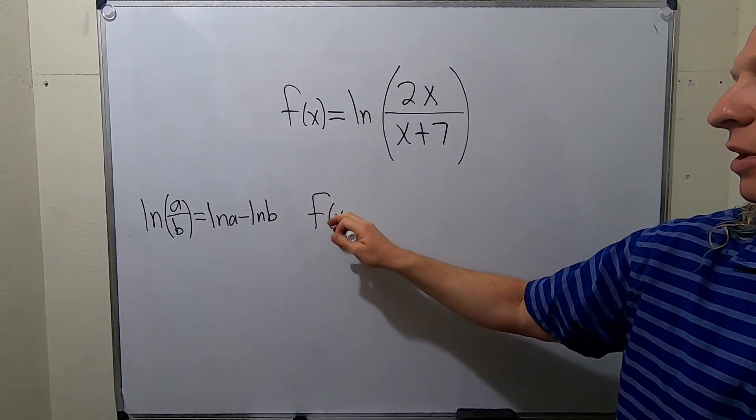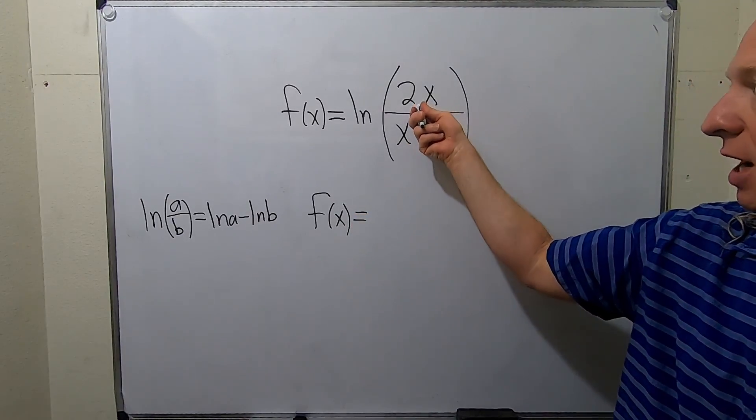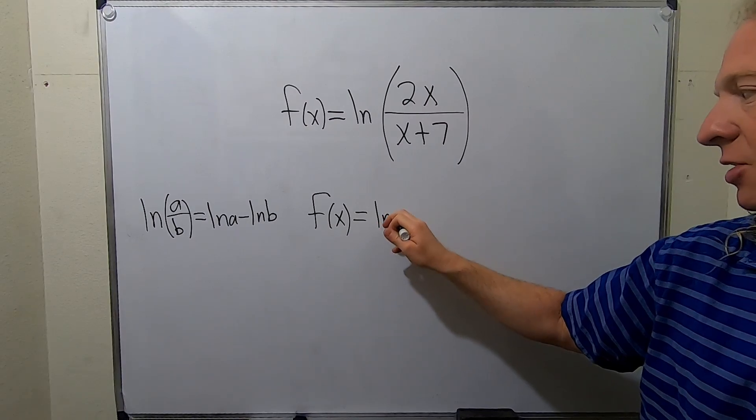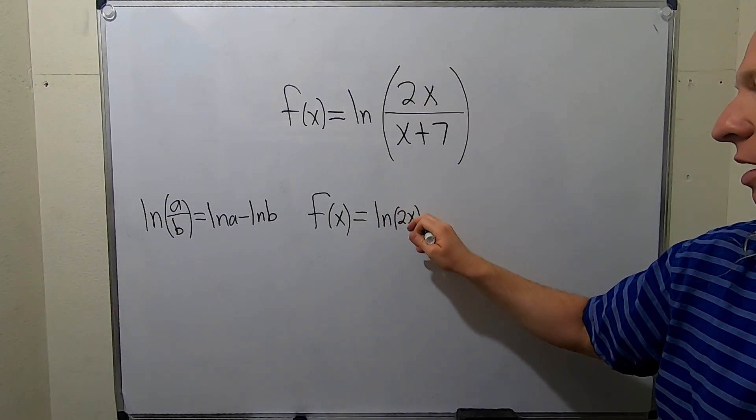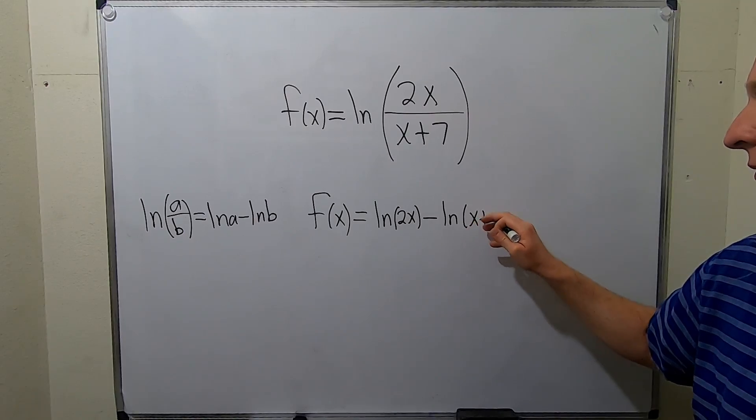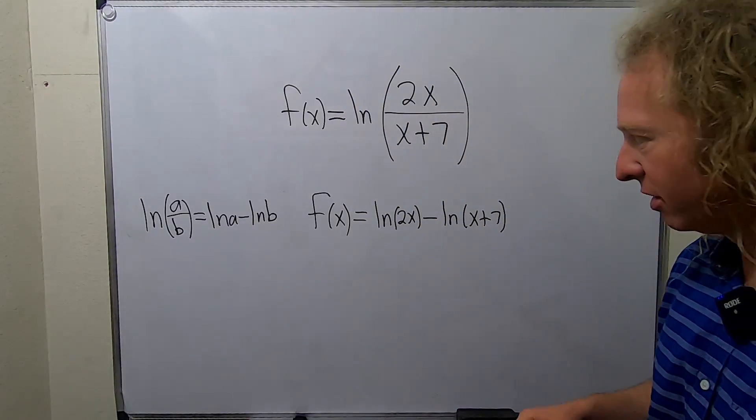So f of x, still f. We're not differentiating yet. So it'll be the natural log of the top piece minus the natural log of the bottom piece. So the natural log of 2x minus the natural log of x plus 7. So now we're ready to take the derivative.